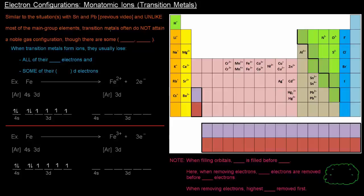In the last video, we talked about the electron configurations of monatomic ions in the main group elements. In this video, I want to do the same thing, talking about the electron configurations of monatomic ions, but specifically for those in the transition block.